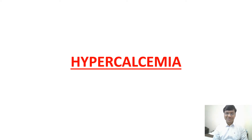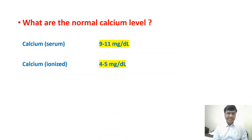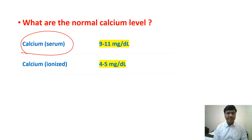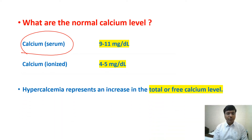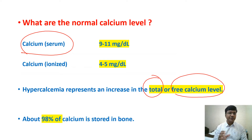Starting with how much is the normal calcium level in our body — we have total calcium and free or ionic calcium. The total serum calcium is around 9 to 11 milligrams per deciliter, which is the bound form, meaning it is bound to albumin. The ionized or free calcium is around 4 to 5 milligrams per deciliter. Almost 98% of the calcium present in our body is stored within the bone.